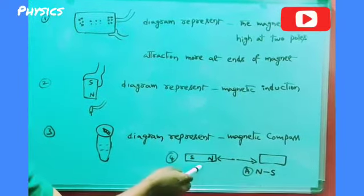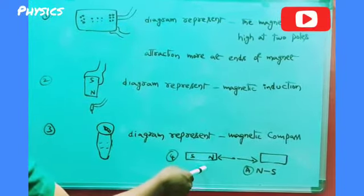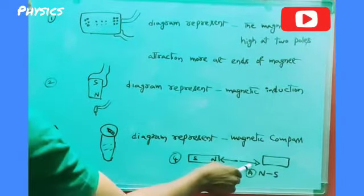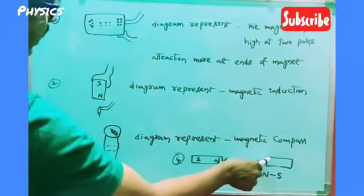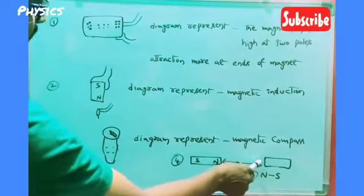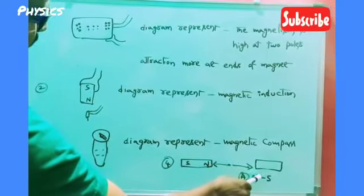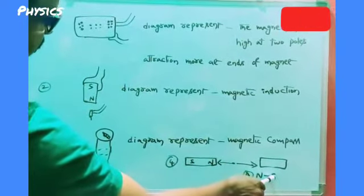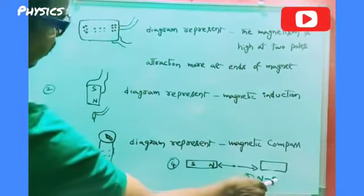See this magnet, bar magnet, south to north. And this arrow mark indicates another bar magnet. But poles are north to south. You all understand? North to south.